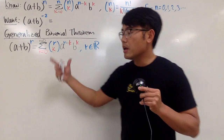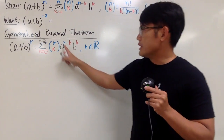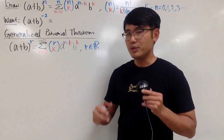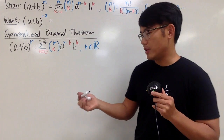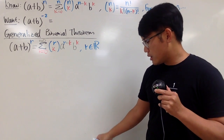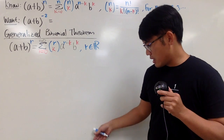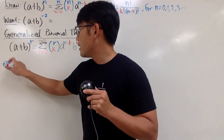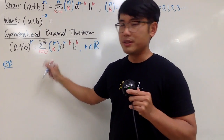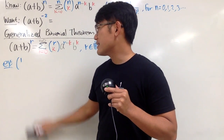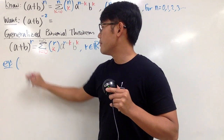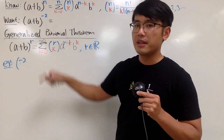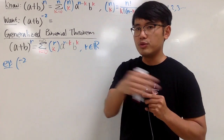In order to make sense of this, I'll have to explain the r choose k notation when r is any real number. Let me write down an example of how we compute this. When we have r equal to negative 2 — the deal is that k goes 0, 1, 2, 3, 4, 5, and so on. Do not ask what happens if k equals 1/2.